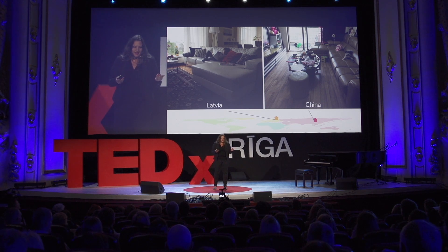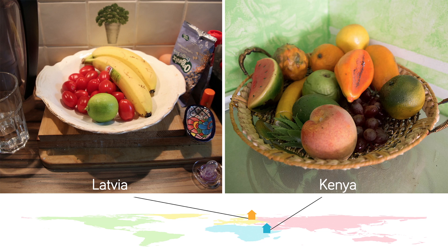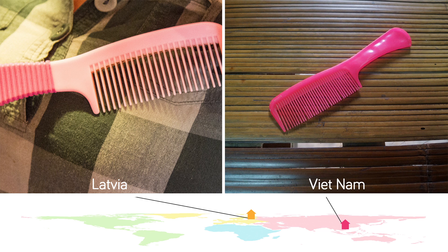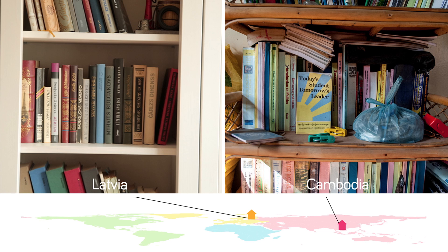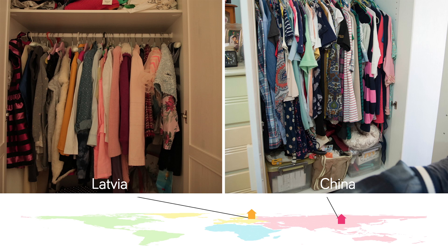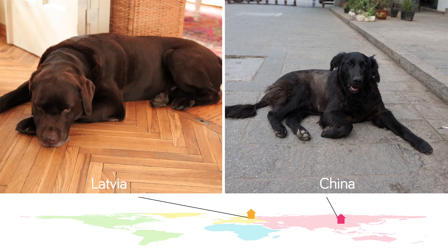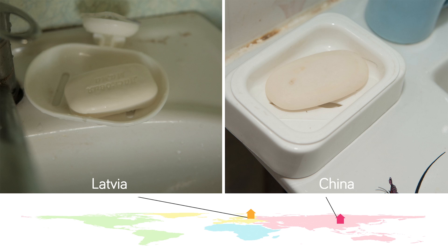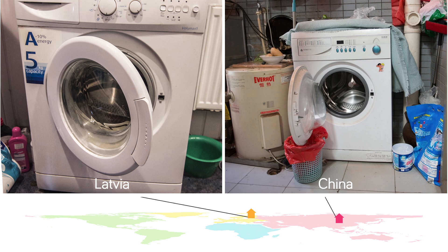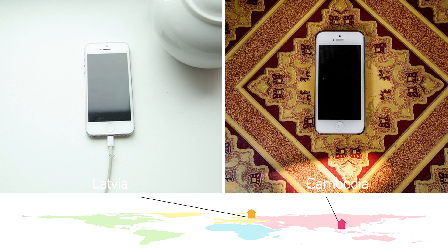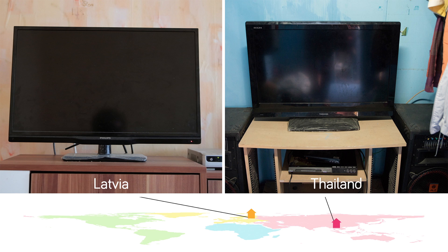Starting to compare imagery like this, we can look at fruit bowls in Kenya and Latvia — the fruits might differ a little bit, but the idea is the same: we put a bowl with fruit visually in our kitchen. Or pink combs in Vietnam and Latvia — it's quite hard to distinguish which one is the Latvian comb. Or bookshelves, toilet paper, wardrobes, shoe racks, lamps, shoes — the nicest shoes you have is one of the categories. The pet tends to be a black dog. The carpets, the bar of soap, the air conditioner, the washing machine, the wall clock, the iPhone, the laptop, and the flat TV. Looking at these things, the similarities are quite striking.